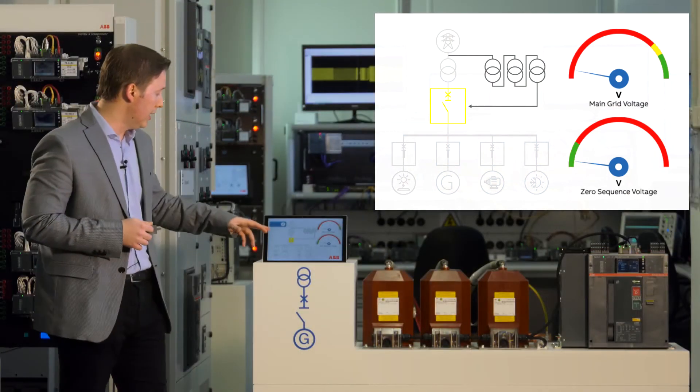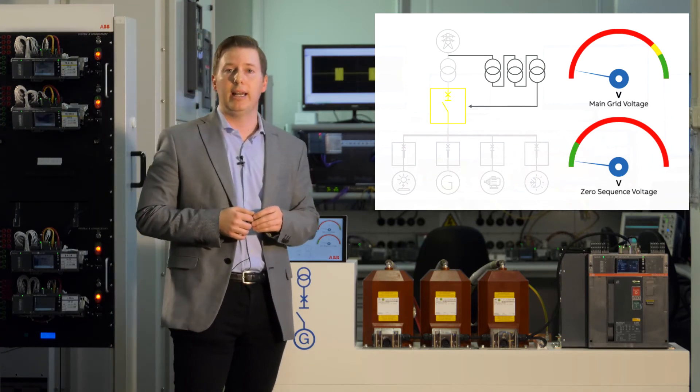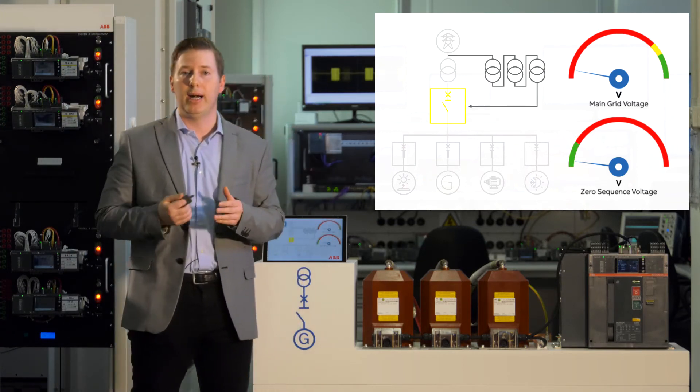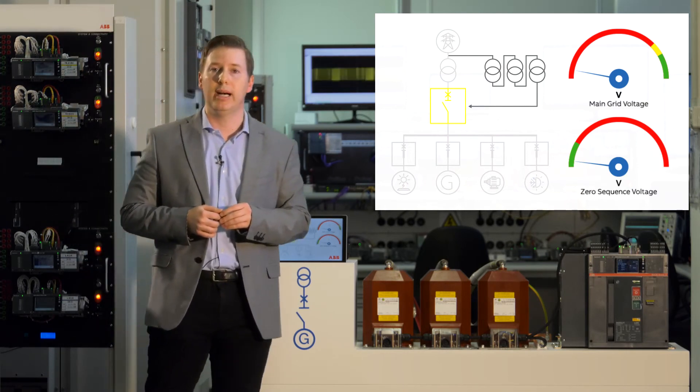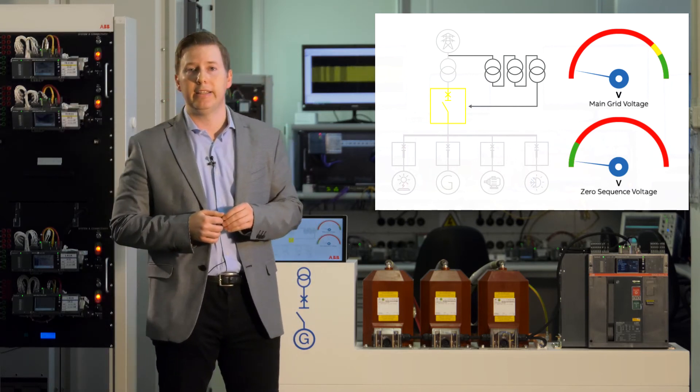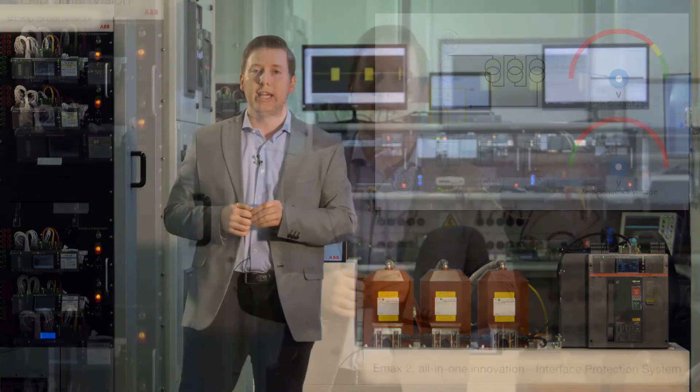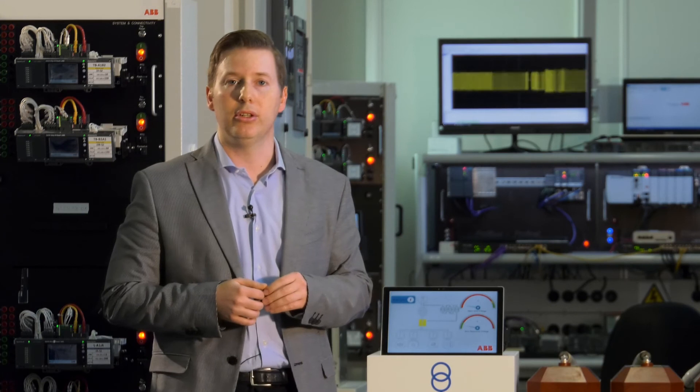As you can see, we have the shutdown of the whole plant since we have an imbalance between the power generated by the local generation and the power consumed by the loads. In order to maintain active the local plant, we have to implement the other feature called load shedding in order to maintain the balance between power generated and consumed by means of a rapid disconnection of the so-called non-priority loads.